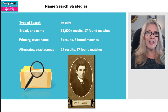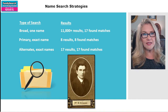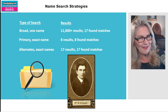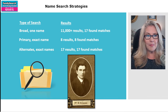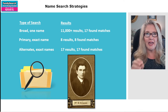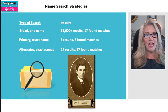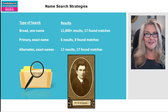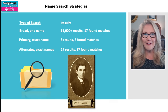Let's take a quick look at how it all came out. The first search was one name, broad, no exact match — got over 11,000 results, about 17 records were actually the right person. Then I did just the primary exact name — Raymond Cook spelled correctly, exact match — only got eight. So while they were all absolutely him, I was missing records. When I used my alternate names and did all four with exact match, I got 17 results and 17 matches. The alternate names really pays off. Try everything so you don't miss anything.